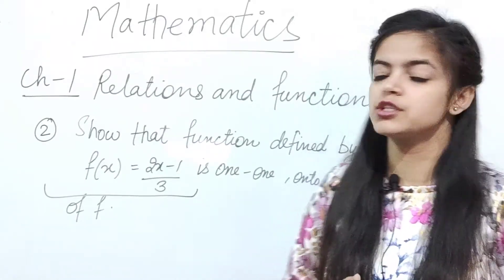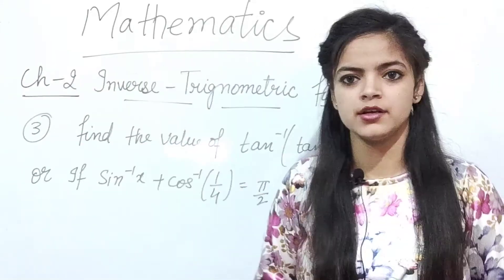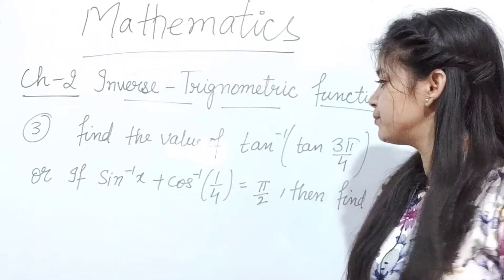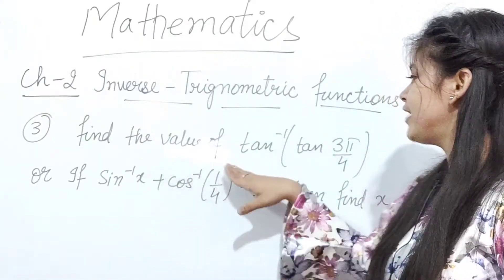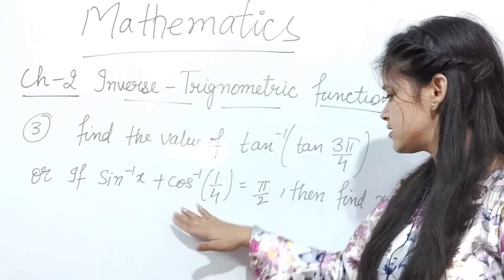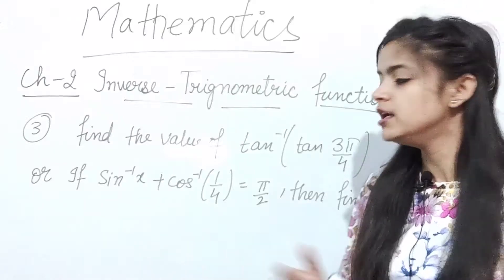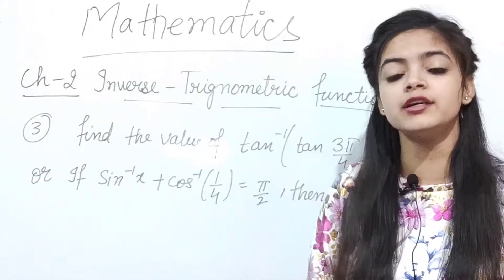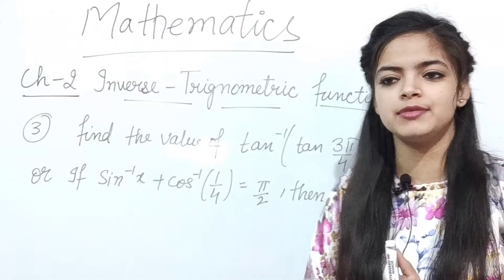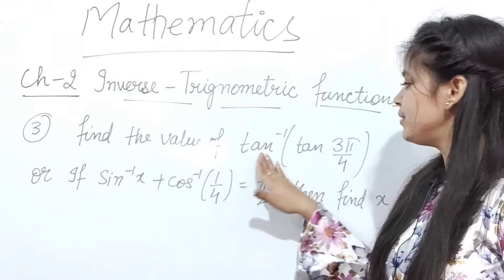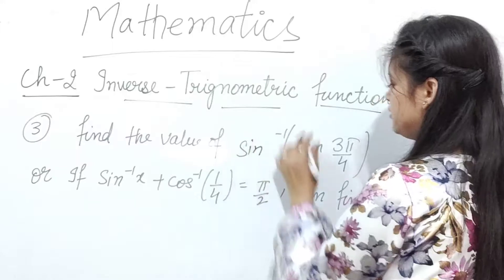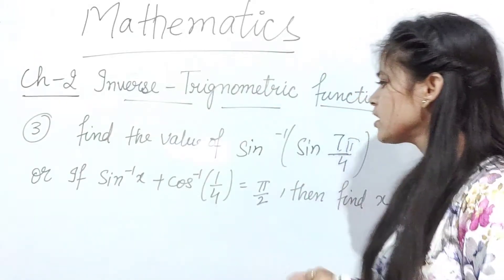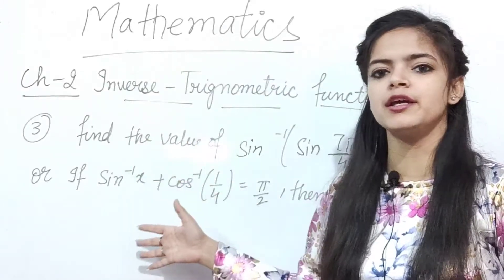Binary operation will only have a 1-mark question. Now move on to chapter number 2, Inverse Trigonometry. In this chapter, short questions can come in the form of: find the value of tan inverse (tan something), or sin inverse x plus cos inverse something is equal to something — then find the value of x. This form of question repeats in the last 5-10 years.